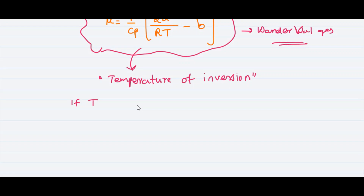If the temperature is less than 2A/RB, the gas will cool down when it passes through the porous plug in the Joule-Thomson experiment, where gas moves from pressure P1 to P2.